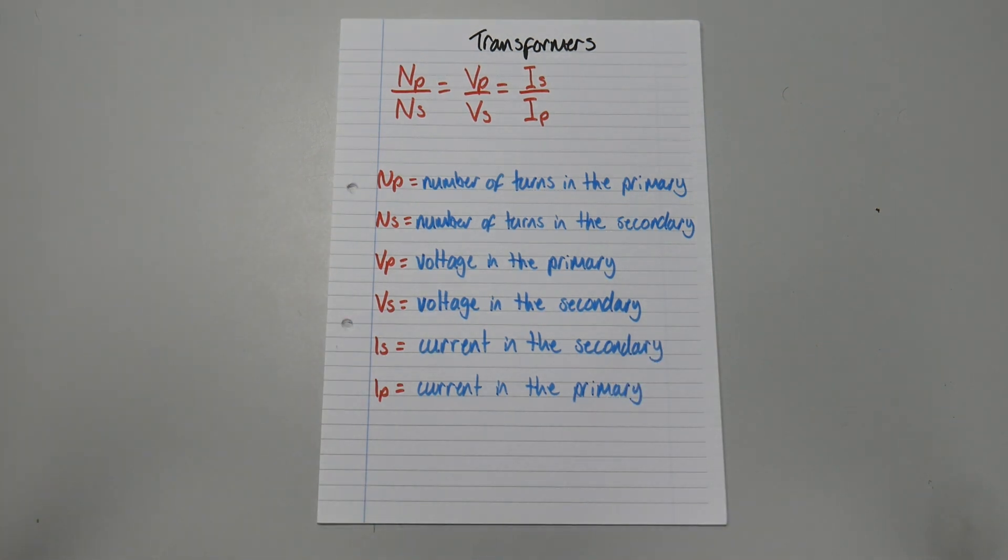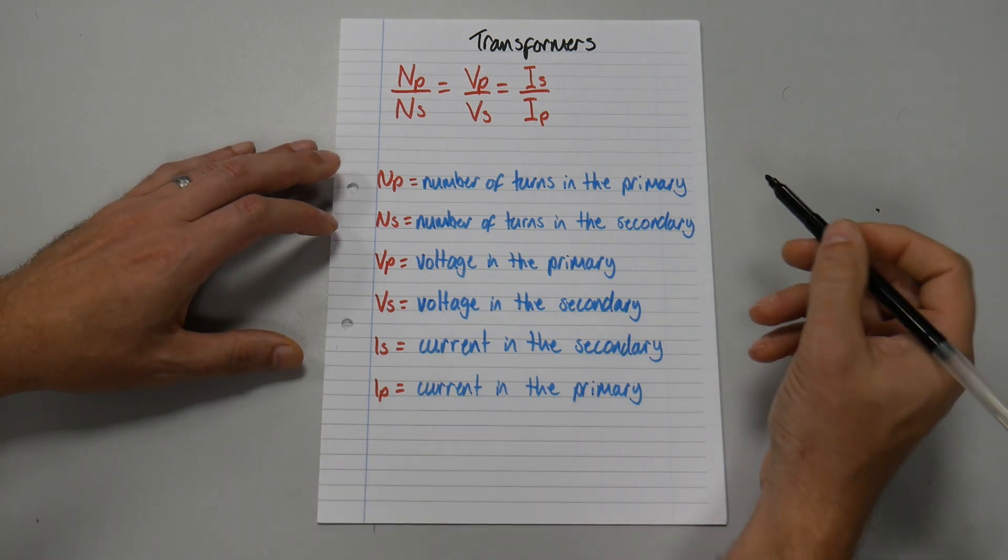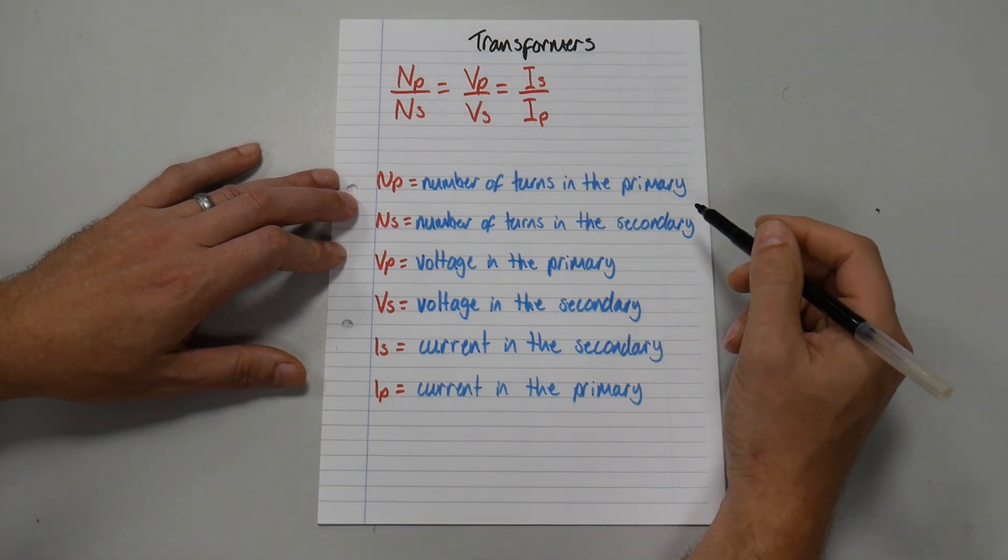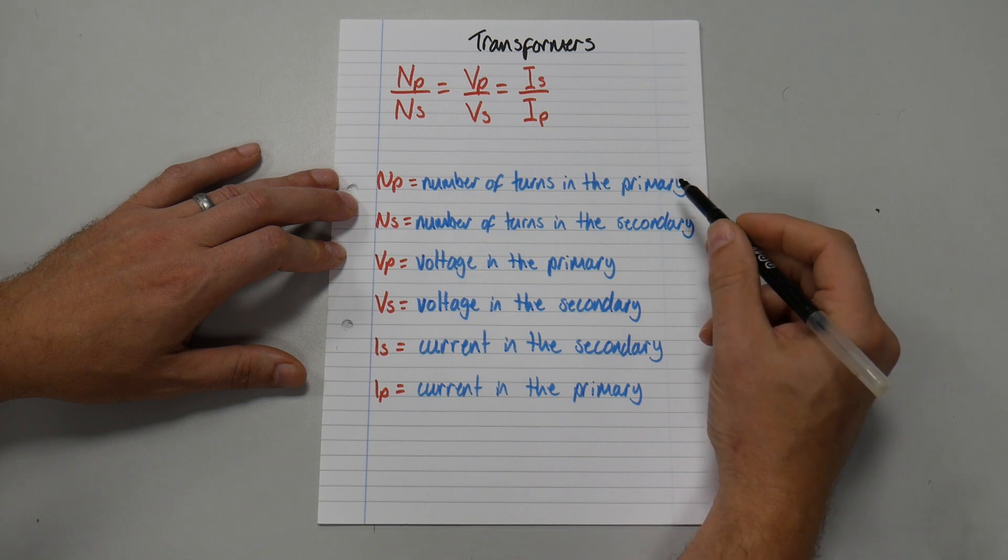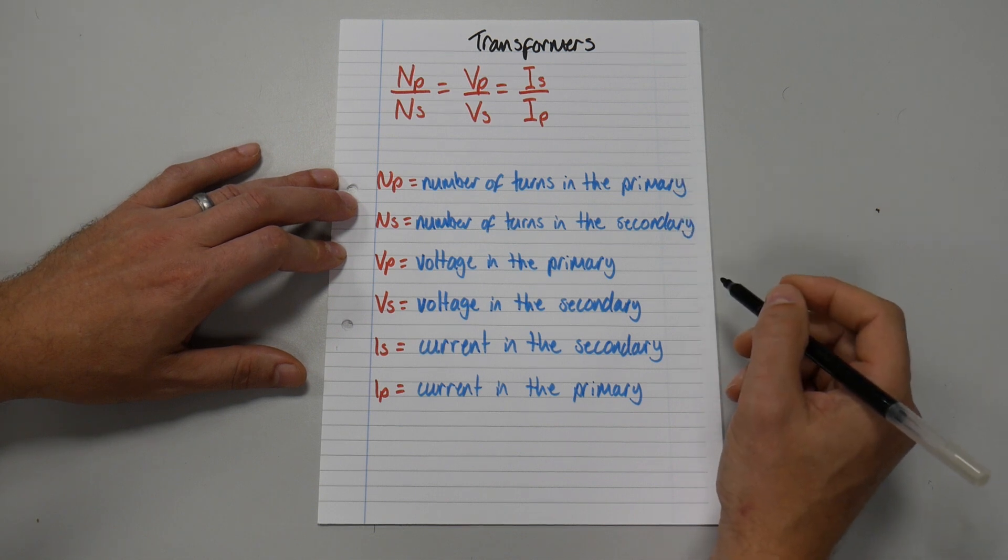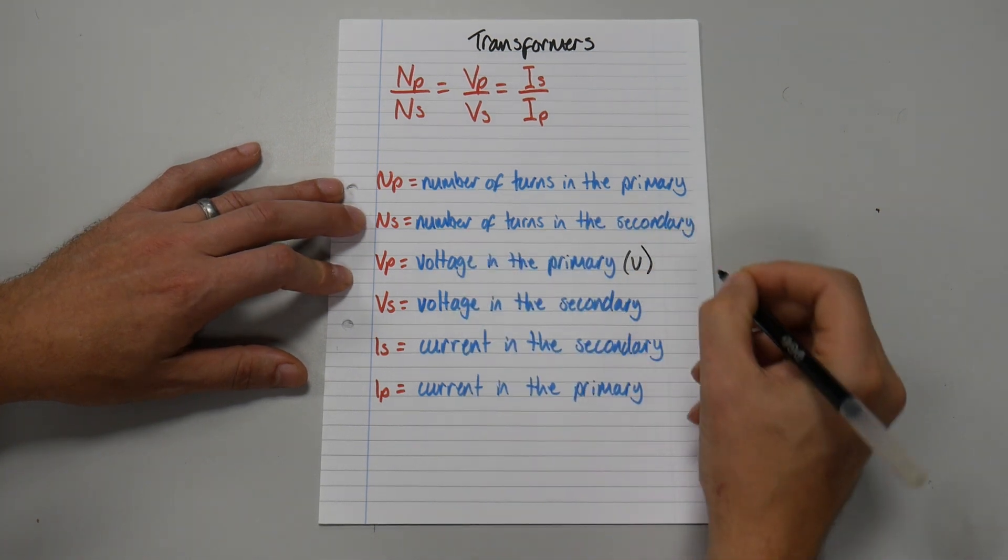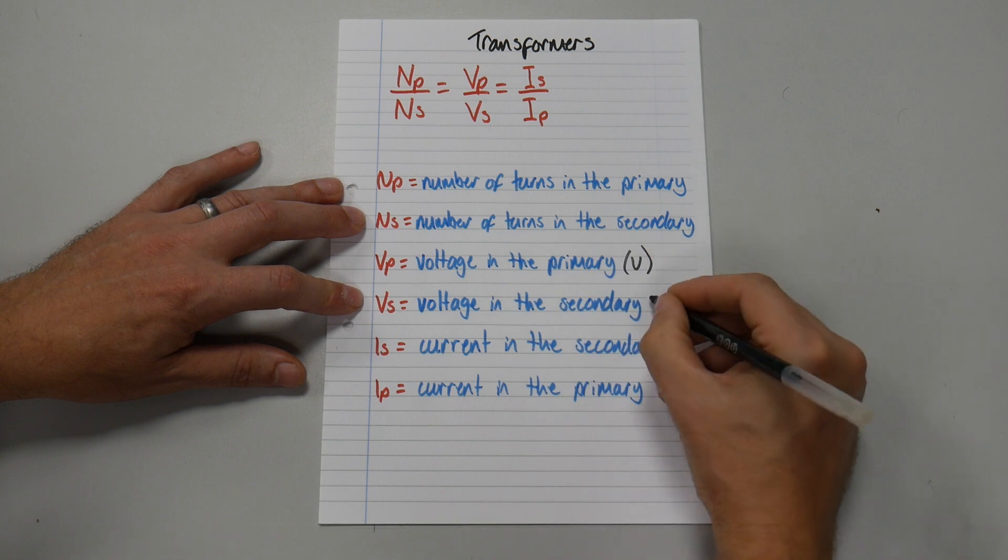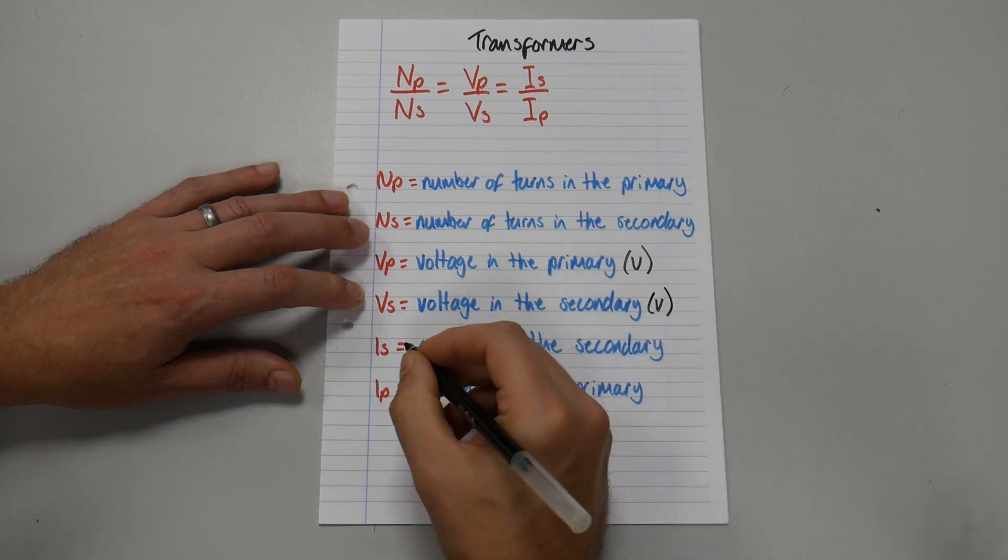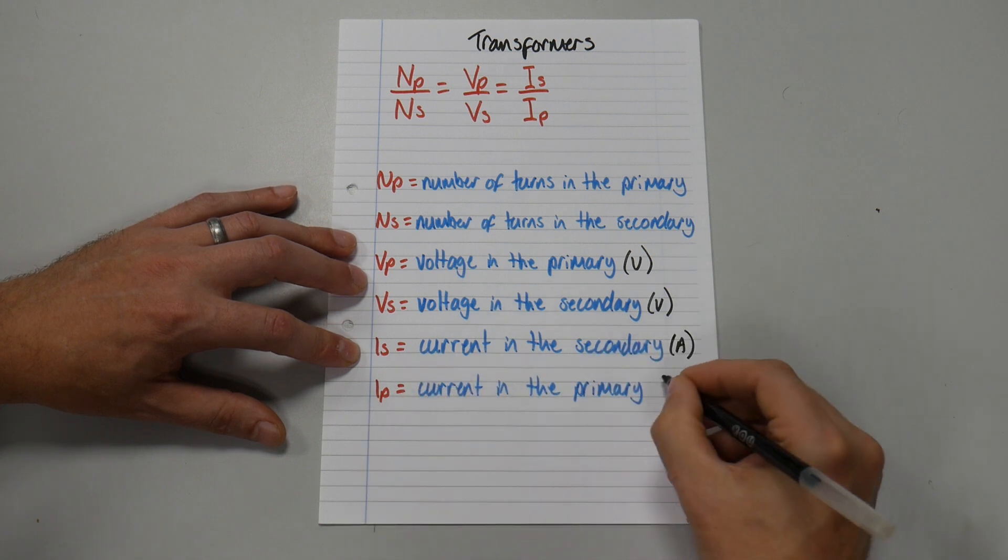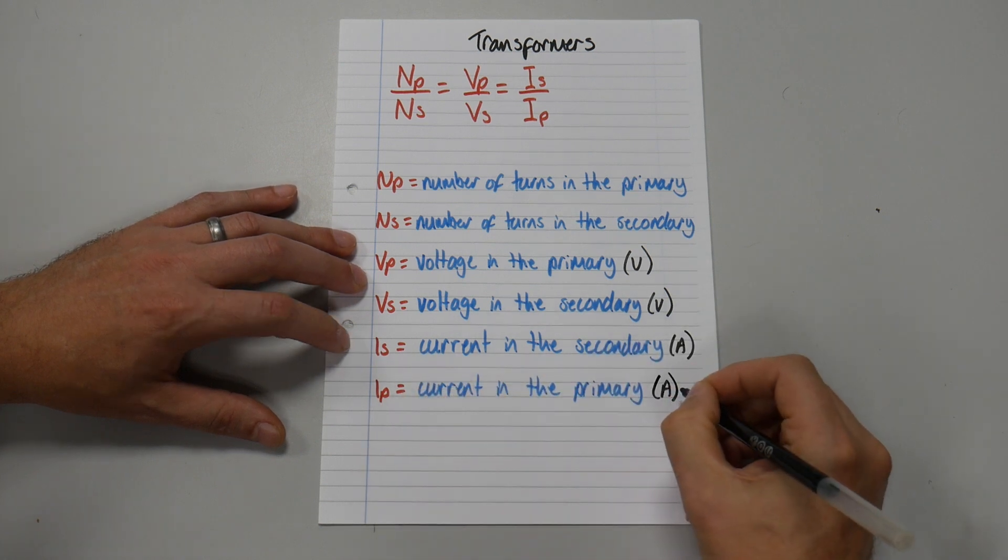And if I write my SI units: there's no SI unit for the number of turns, that's just the physical number of turns wrapping around the primary side or the secondary side of my transformer. Voltage is V. IS is current, that is amps, and IP is current, that is measured in amps.